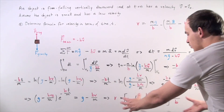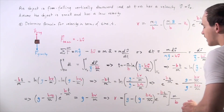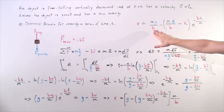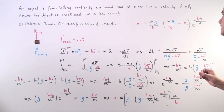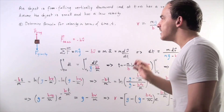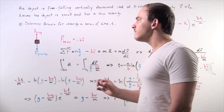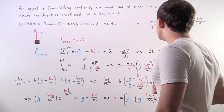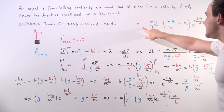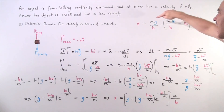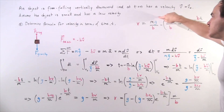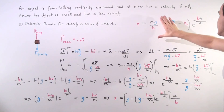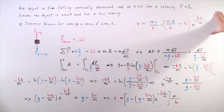This is exactly what we get. We can simplify the right side, and our end result is: the magnitude of velocity at any given time is equal to m times g divided by b minus that whole remaining term.